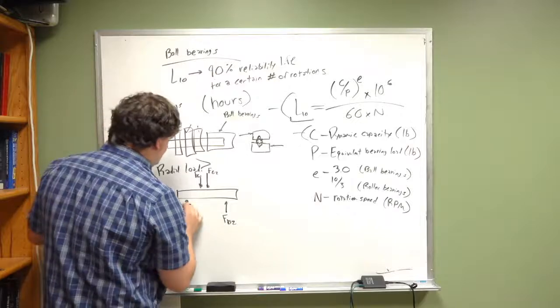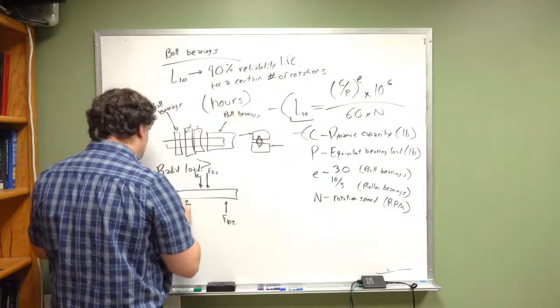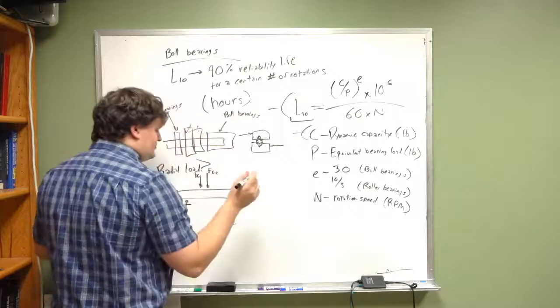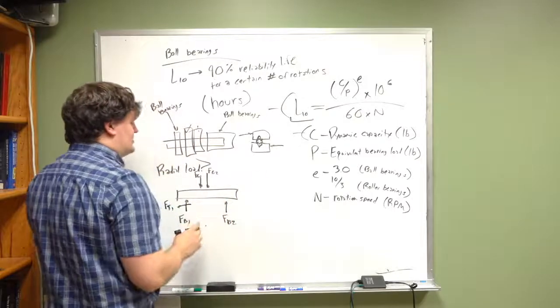You take the two vectors and sum them to equal one vector. You figure out your equivalent loading, thrust plus radial loading, to figure out how much loading is actually being done on the ball bearing. It can reduce the life. You know what, for the sake of this, let's assume that there is FT1, and only one of the bearings handles thrust.